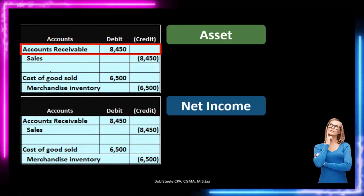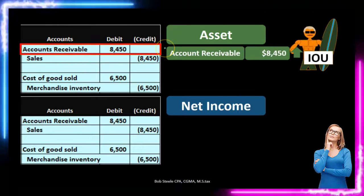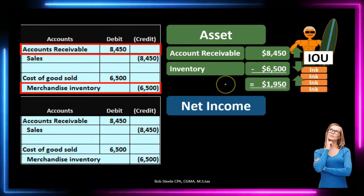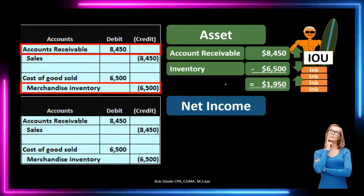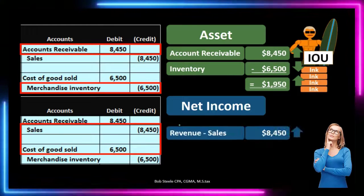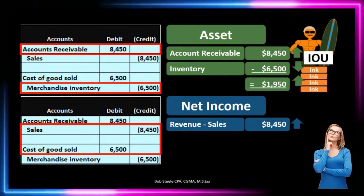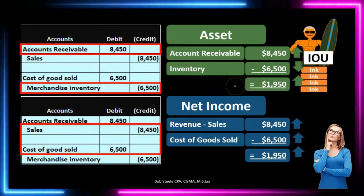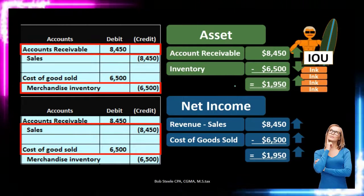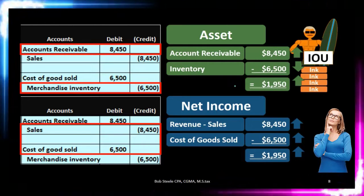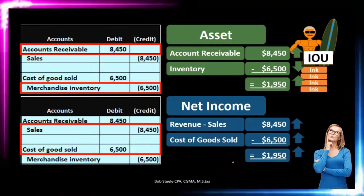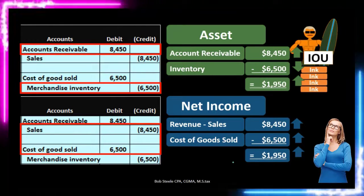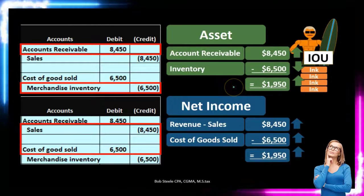Let's analyze the balance sheet and income statement accounts affected. Accounts receivable is going up and inventory is going down, so there is a net increase in assets of $1,950. On the income statement, sales is going up by $8,450 and expenses are going up by $6,500, meaning net income increases by the same $1,950. This symmetry makes sense: the net increase in balance sheet assets equals the net increase in net income — revenue goes up, expenses go up, and revenue minus expenses increases by the same amount.